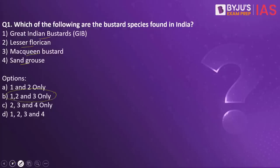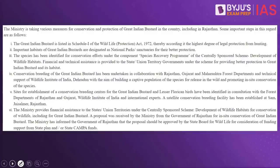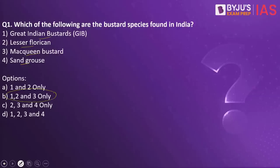Why have we taken this practice question? Because of the reference in the PIB article which makes a reference to the Great Indian Bustard. Let us try and understand what are these options. When we look into which are the types of Bustards found in India, there are four species of Bustard. One is McKean's Bustard, so the third statement is right. Then we have the Lesser Floricon — the second statement is also right — and we all know the Great Indian Bustard is found in India. So we have 1, 2 and 3, but the fourth is not a Bustard.